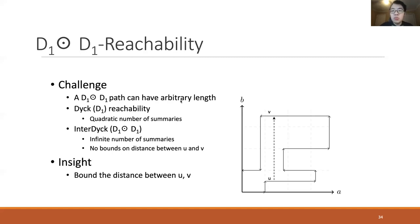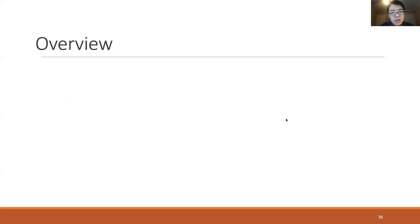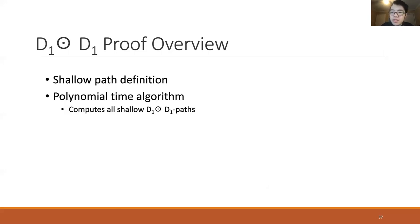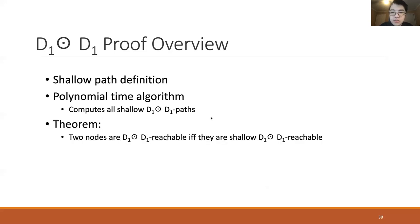Our insight is to probe whether we can give a bound for the distance between nodes U and V. We give an overview of our main steps: first, we define a special set of paths called shallow paths, in which the distance between U and V nodes is bounded. Then we present a polynomial time algorithm to compute all pairs connected by shallow D1D1 paths. Finally, we introduce the theorem guaranteeing that the set of nodes connected by shallow paths is exactly the result for bi-directed D1D1 reachability.